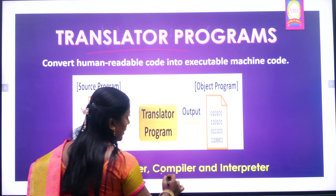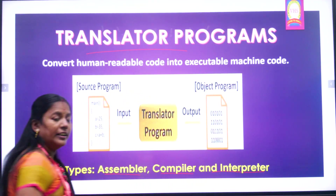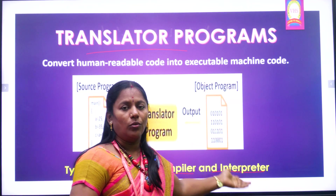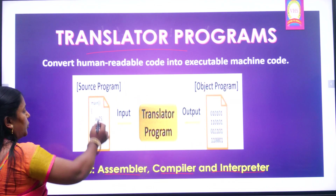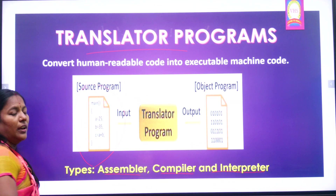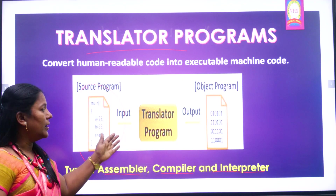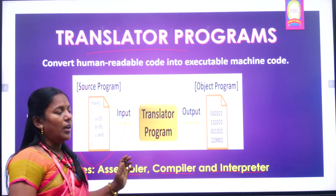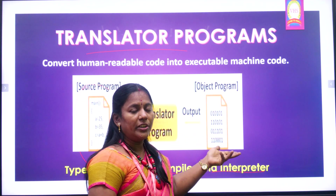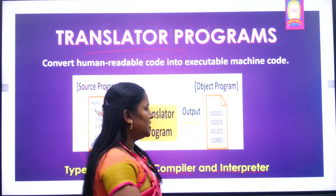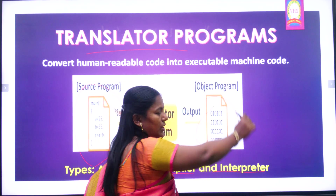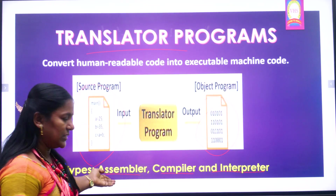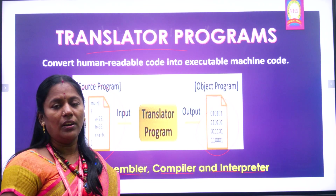We have three different types of translators: assembler, compiler, and interpreter. Whatever program we write, when submitted, the translator program takes it as input and gives output as the program written in machine language.